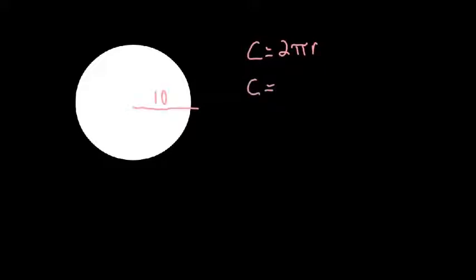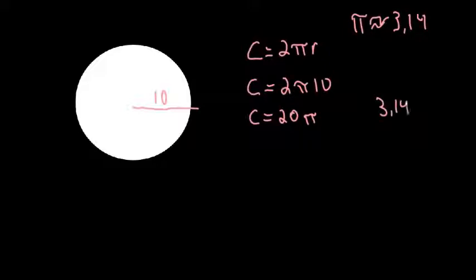So my circumference equals 2 times pi times 10. So do the 2 times 10 first. So circumference equals 20π. So now I need to estimate this. Remember we estimate pi to be about 3.14. So I'm going to do 3.14 times 20.